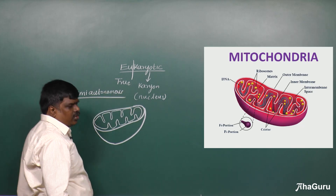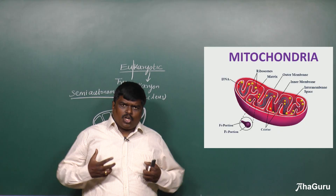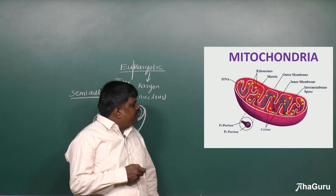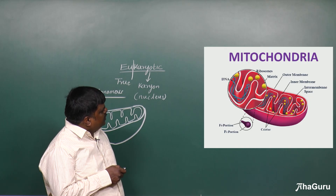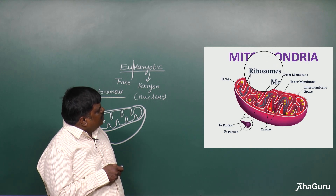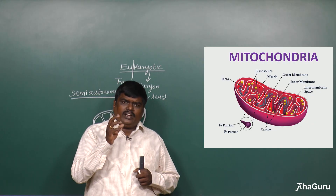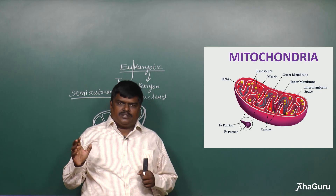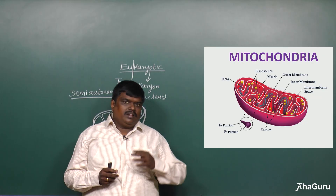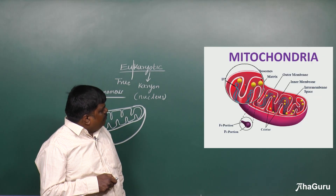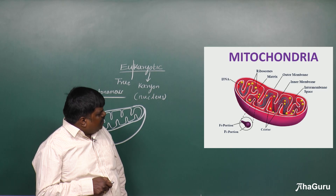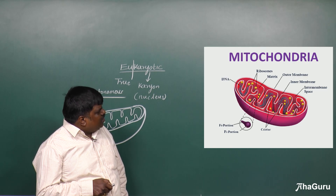What do we mean by semi-autonomous organelle? Mitochondria has its own DNA, as you can see here. It also contains another cell organelle called the ribosome. Ribosomes are present in all organisms — in primitive as well as advanced organisms. You can see the ribosomes in the diagram.